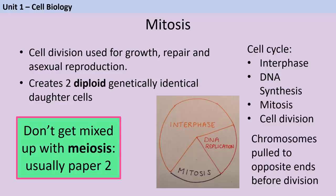Mitosis occurs as part of the normal cell cycle, following interphase where the cell grows and undertakes normal metabolism. There's a DNA replication phase where all of the DNA is copied, so the cell has two copies — twice as much DNA as before. Then the chromosomes are pulled to opposite ends of the cell, and the cell divides once, producing two diploid daughter cells that are identical to the original cell and to each other.